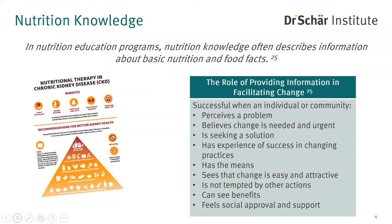Food and nutrition information can be communicated in such a way as to enhance motivation for behavior change. This type of thing can be successful when an individual or community perceives there's a problem, believes change is needed and urgent, is seeking a solution, has experience of success in the past, has the means, sees that the change is easy and attractive, is not tempted by other actions, can see the benefit, and has social approval and support. If these conditions are lacking, simply providing the information is not going to be an effective way to get someone to follow your diet prescription.